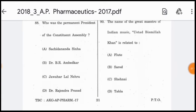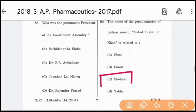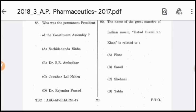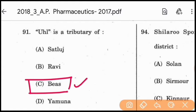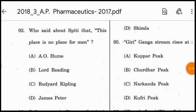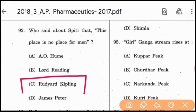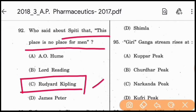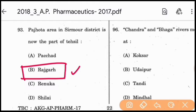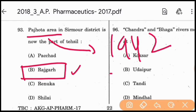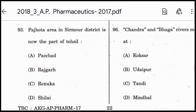Question 90: Ustad Bismillah Khan is related to the Shehnai. Question 91: Uho is a tributary of River Beas. Question 92: Rudyard Kipling said about Spiti that 'this place is no place for men.' Question 93: The Panjhota area in Sirmour district — the Rajghar and Panjhota movement started in 1942, which is associated with the Quit India Movement (Bharat Chhodo Andolan) — option B is correct.